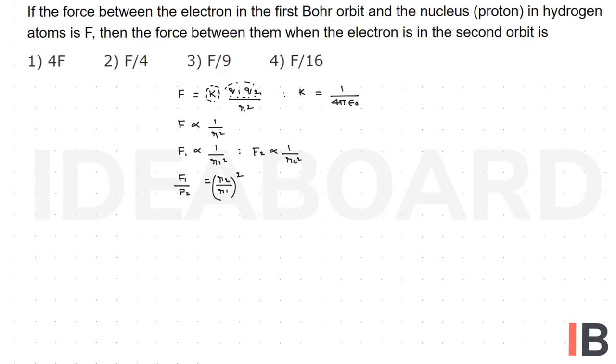The radius of the nth orbit of Bohr is equal to epsilon not h square by pi m e square, times n square.